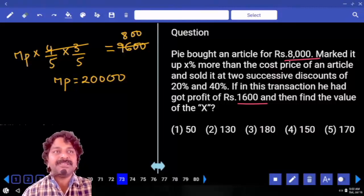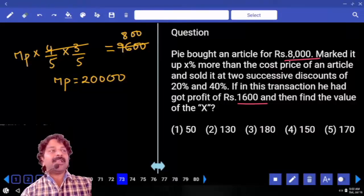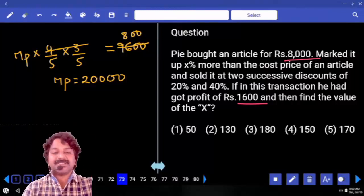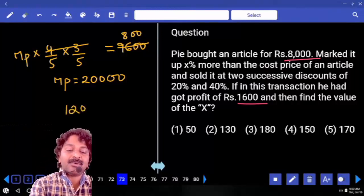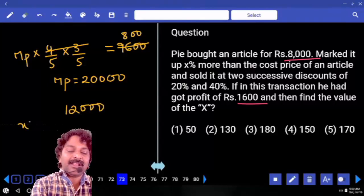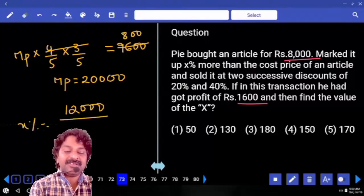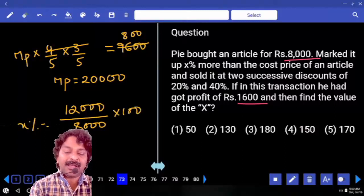How much is cost price? 8,000. Market price is how much more than the cost price? 12,000 more. Then we want to calculate X value: 12,000 more upon 8,000, into 100.